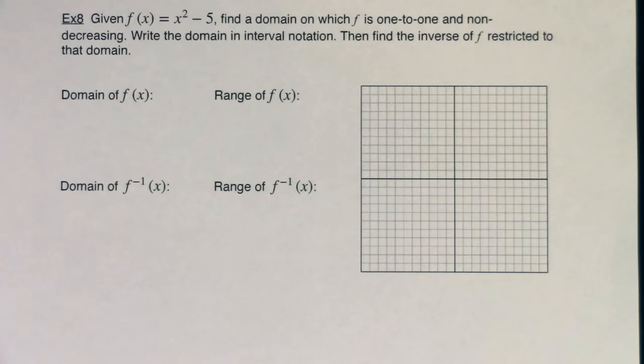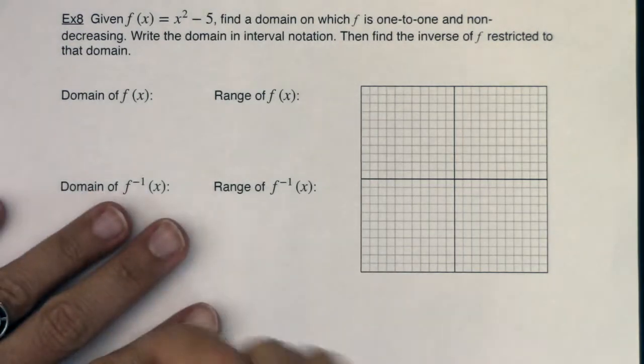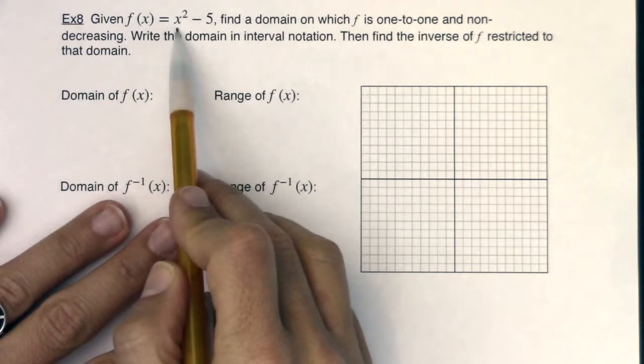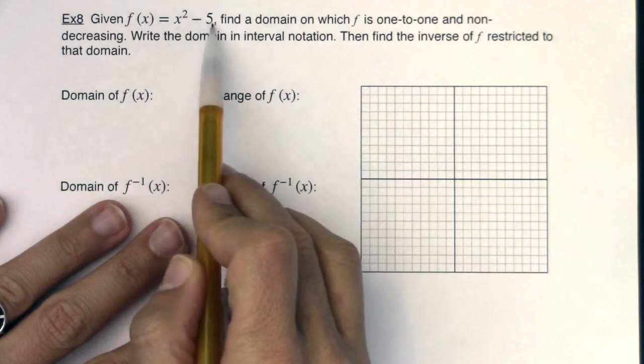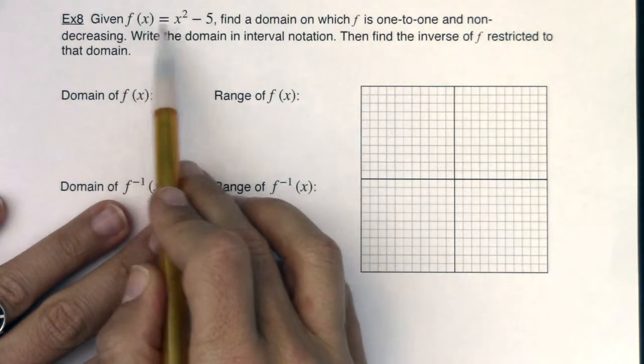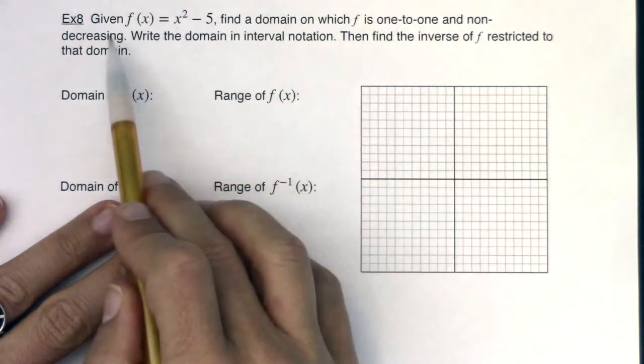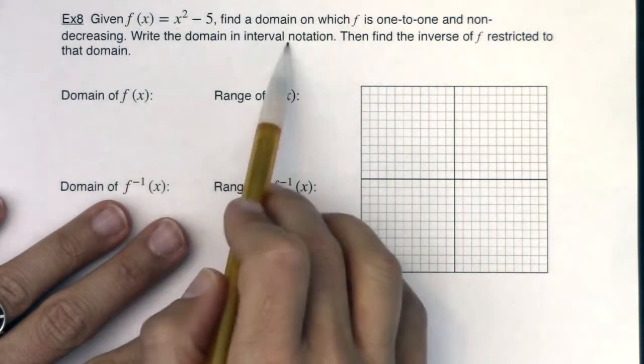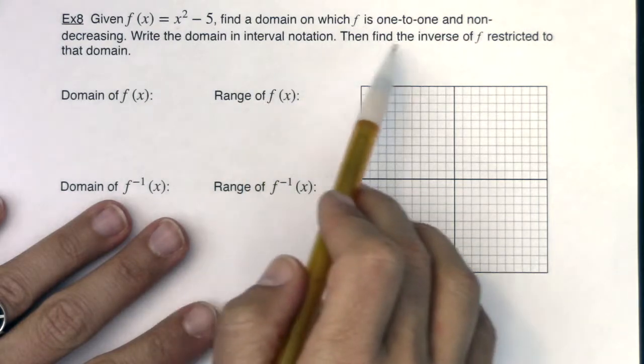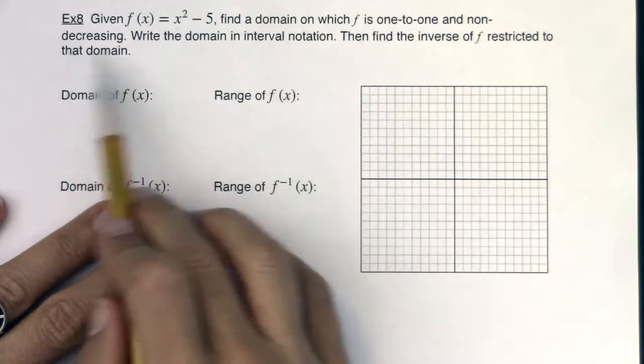Hey Math31, let's really try and unpack example 8. There is a ton to this example. It's kind of the heart of section 3.7. Given this function, one of our toolkit functions shifted down 5 units, f(x) = x² - 5, find a domain on which f is one-to-one and non-decreasing, write the domain in interval notation, then find the inverse of f restricted to that domain.